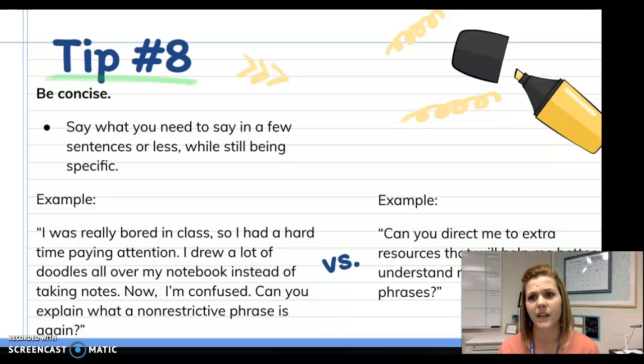The example that shows a non-concise answer says, I was really bored in class, so I had a hard time paying attention. I drew a lot of doodles all over my notebook instead of taking notes. Now, I'm confused. Can you explain what a non-restrictive phrase is again? Or, you could just say, can you direct me to extra resources that will help me better understand non-restrictive phrases? When we're more concise, the recipient is more likely to read our email, and so then they're more likely to respond faster.